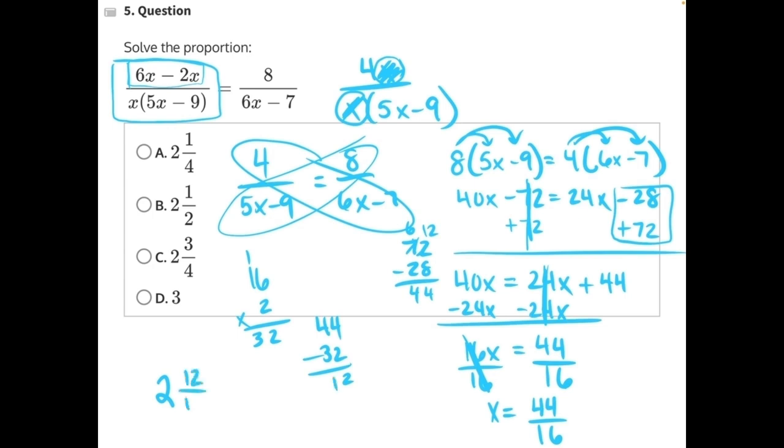So we have 12 on top, 16 on the bottom. We just need to simplify this fraction. We can pull out the greatest common factor of 4 from both the top and the bottom. That would leave us with 2, and 12 divided by 4 is 3, 16 divided by 4 is 4, making C our correct answer.